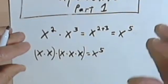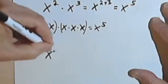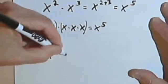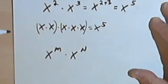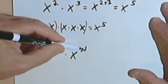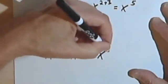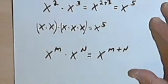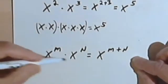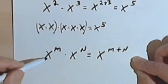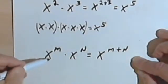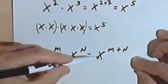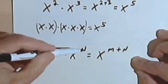In general, this rule is usually written like this: x to the m — where m could be any number at all — times x to the n — where n could be any number at all — is going to equal x to the m plus n. So the bottom line for multiplying two numbers with exponents: the bases have to be the same. Keep the base the same and just add the two exponents together.